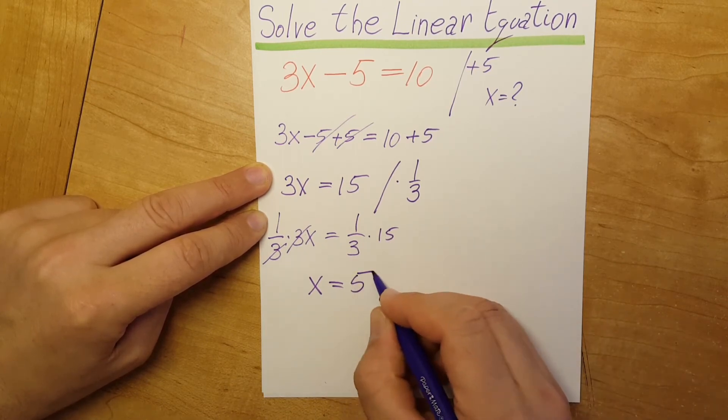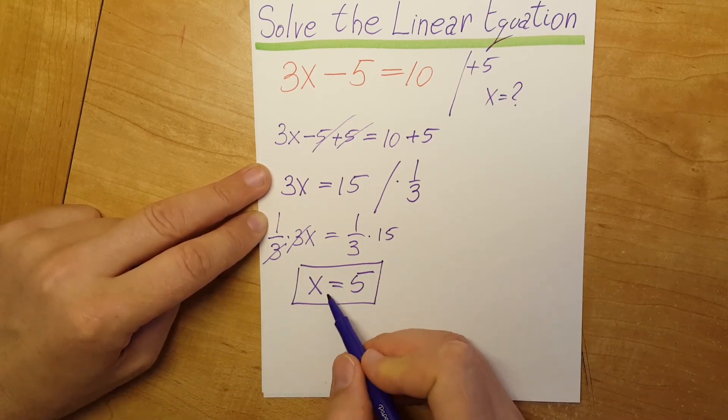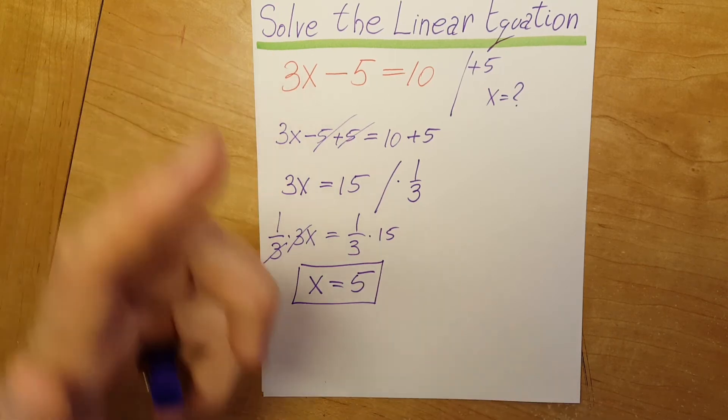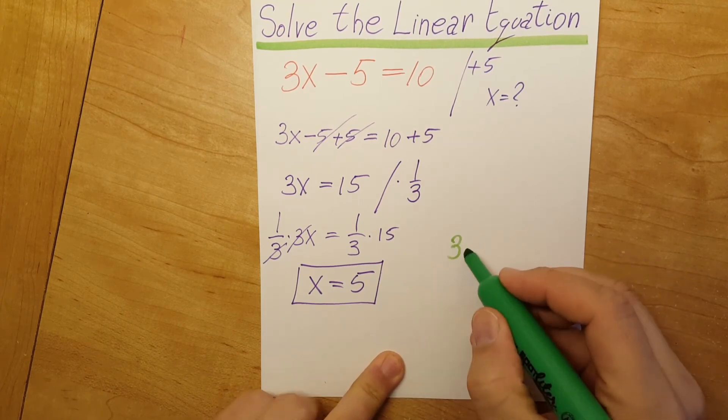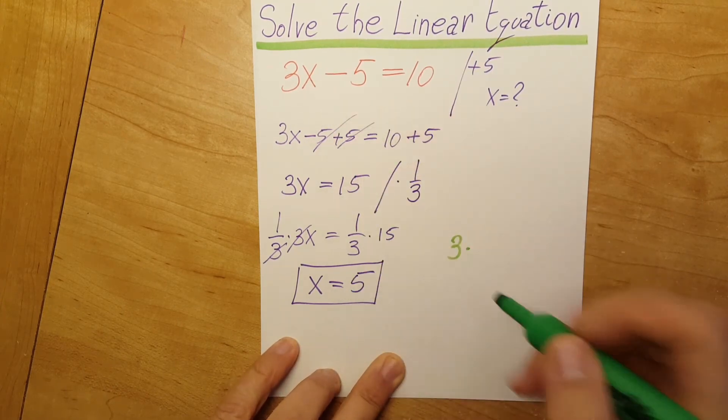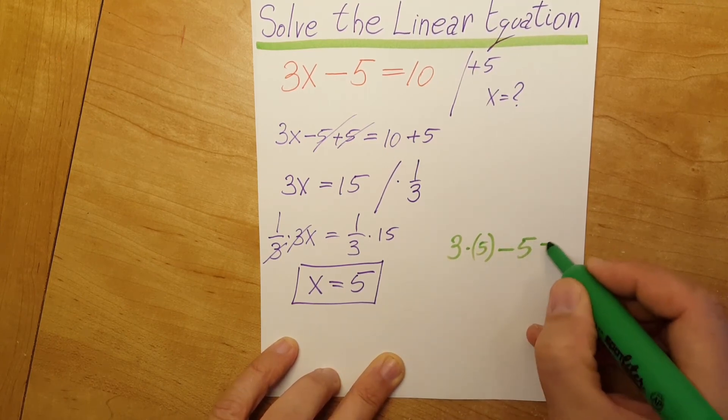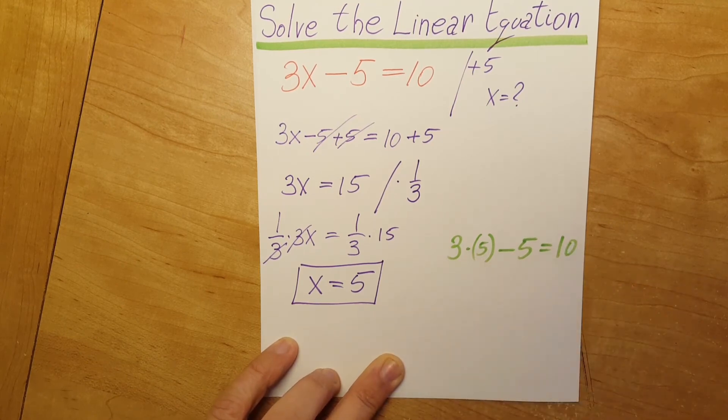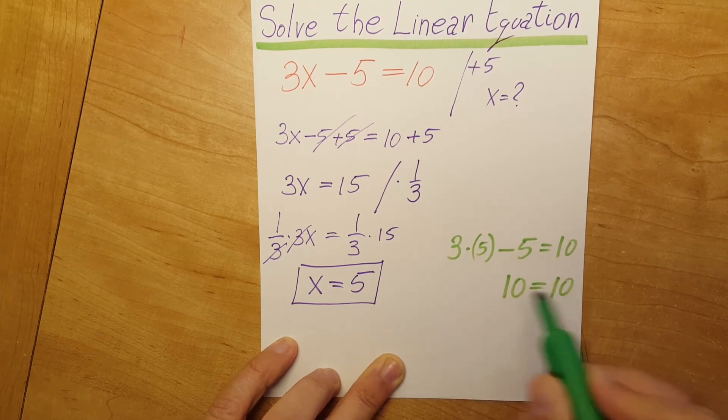If we want to verify, all we have to do is come up here and plug it in. 3 times, instead of the x we're going to put a 5, minus 5 equals 10. Calculate this: 3 times 5 is 15, minus 5 is 10, so 10 equals 10, which is indeed true.